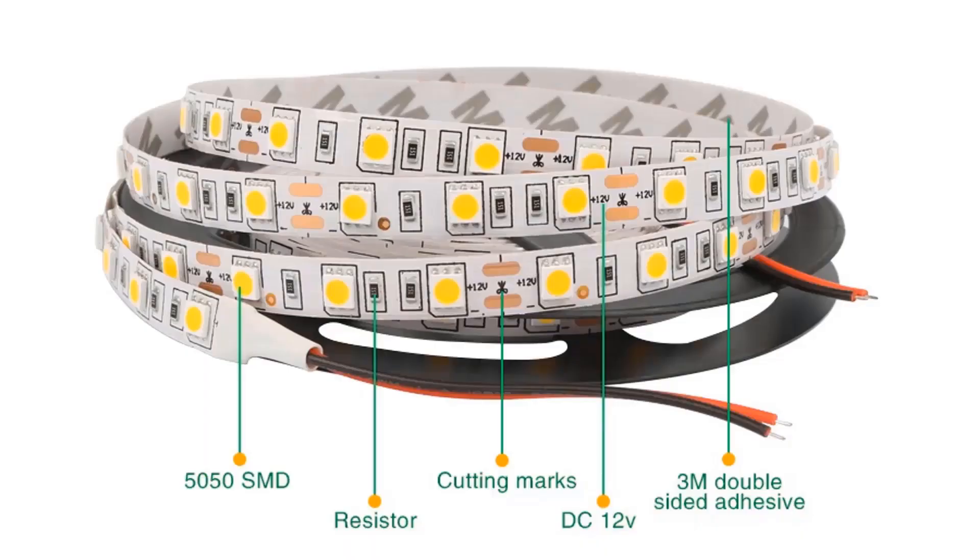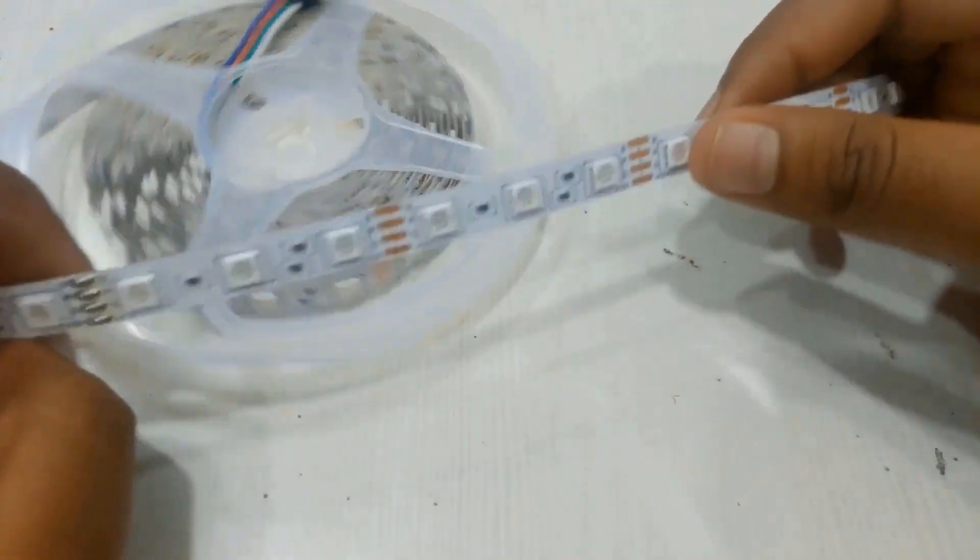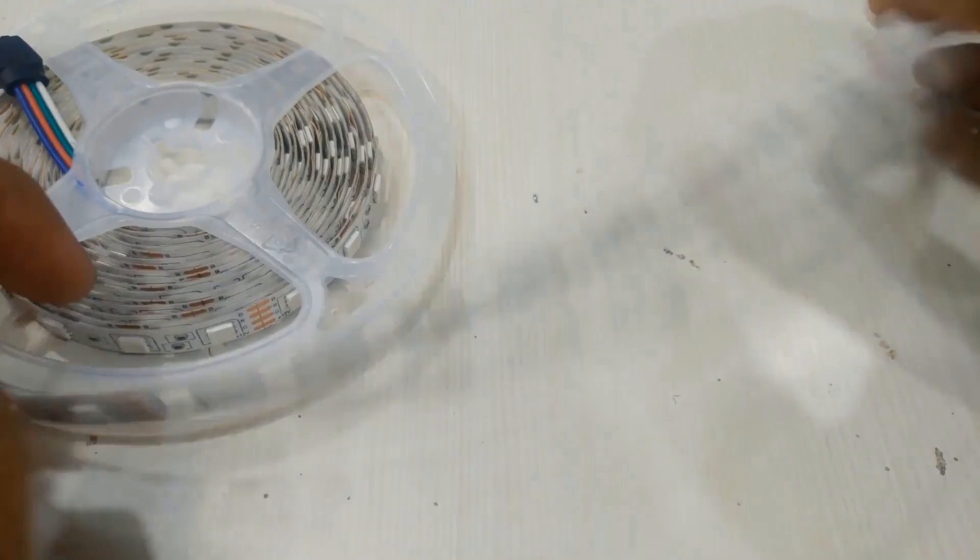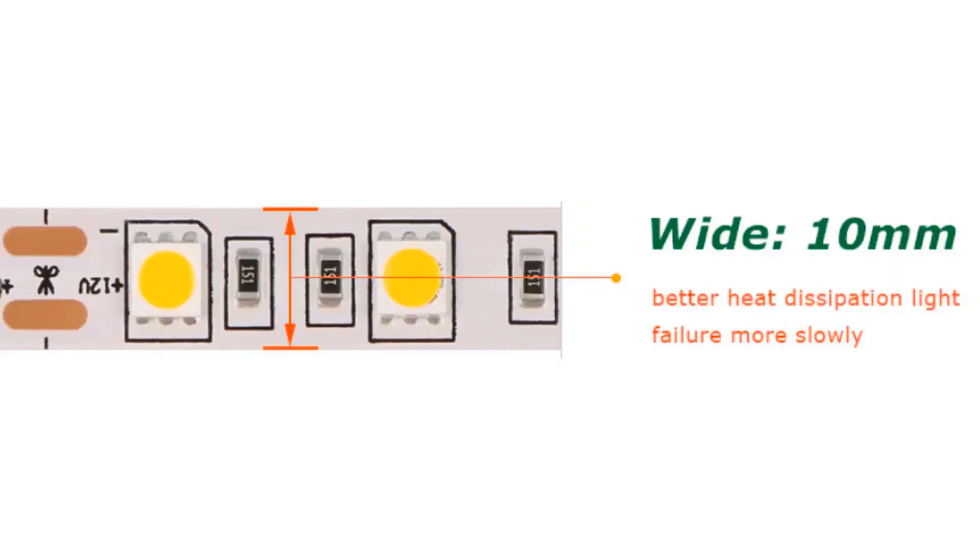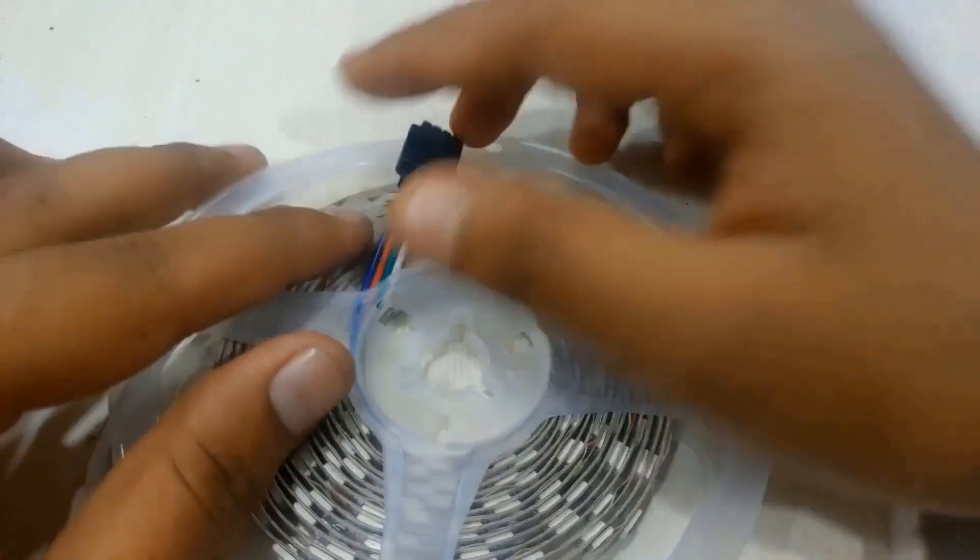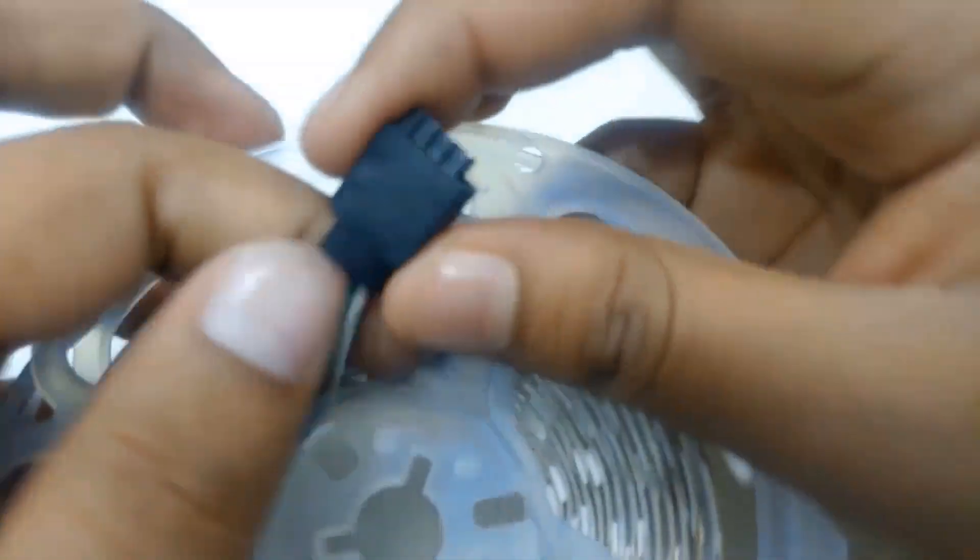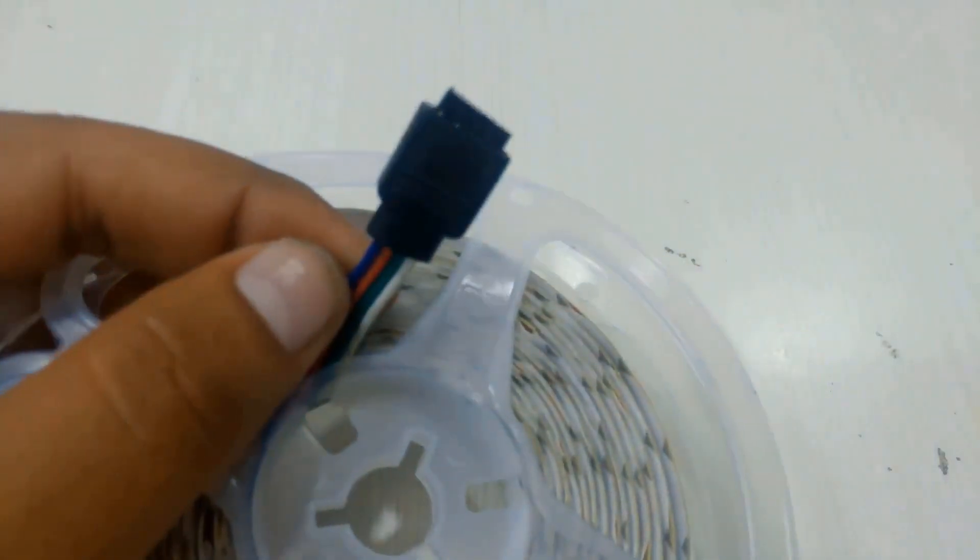The LED package is 5050 SMD with three resistors. The strip operates at 12-volt power supply. It has 3M double-sided adhesive. You can stretch this LED strip as it comes with 5-meter length. The width is generally 10mm, and because of this it has better heat dissipation capacity and lower chances of failure.